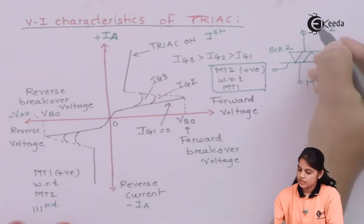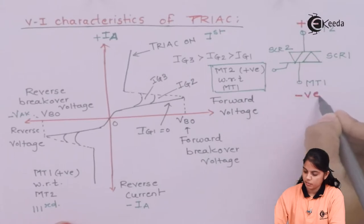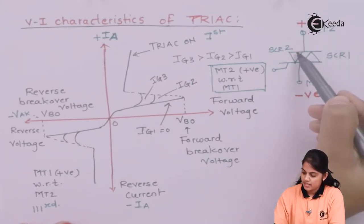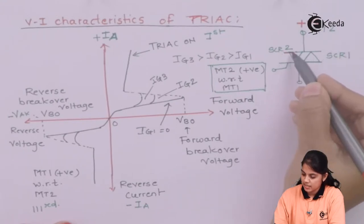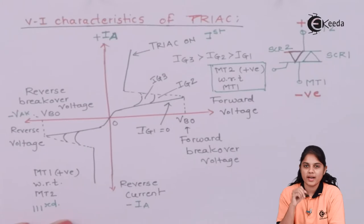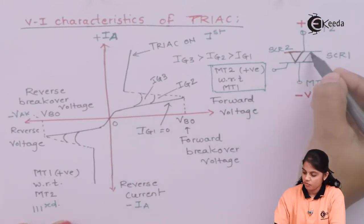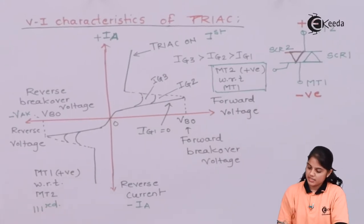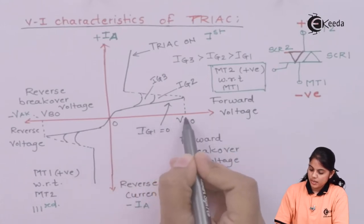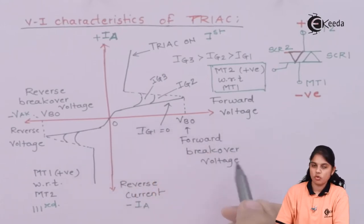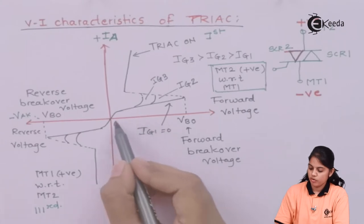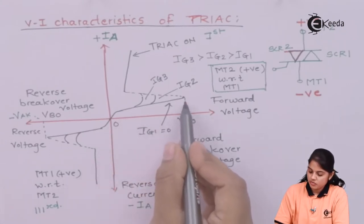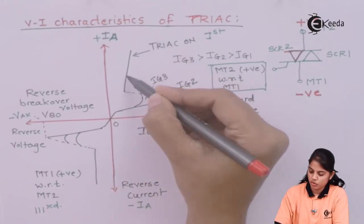In the first quadrant, the condition is that MT2 is made positive with respect to MT1. In this condition, the anode of SCR2 is connected to the positive terminal and the cathode of SCR2 to the negative terminal — so SCR2 will remain in forward bias and SCR1 will be in reverse bias. As you increase forward voltage, you will reach VBO, the forward breakover voltage — the minimum voltage required to turn on the device. Similar to an SCR, once you reach VBO, voltage drops suddenly and a large current flows through the device.